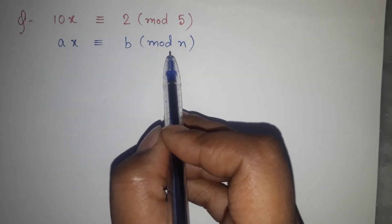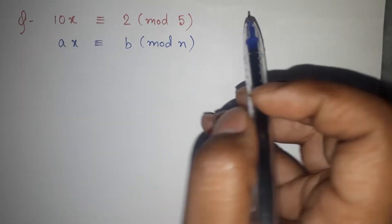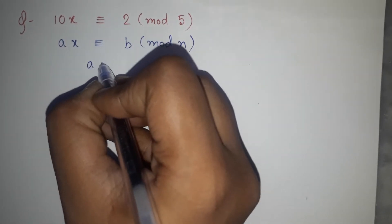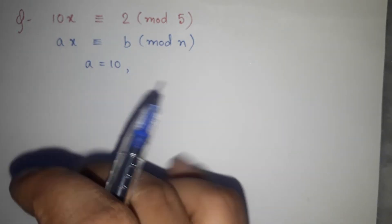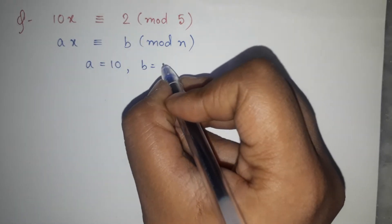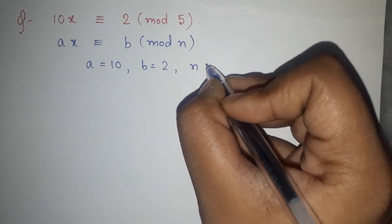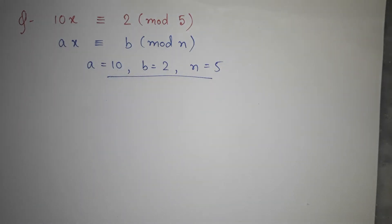If we compare this general format ax ≡ b (mod n) with our given equation 10x ≡ 2 (mod 5), we get: a = 10, b = 2, and n = 5. Write down these three values from the given question, and then we can start solving.